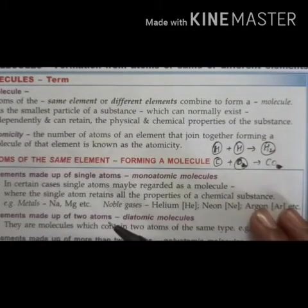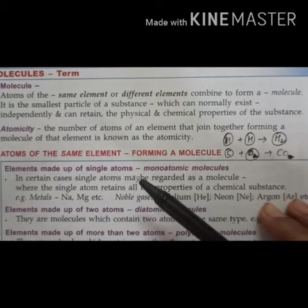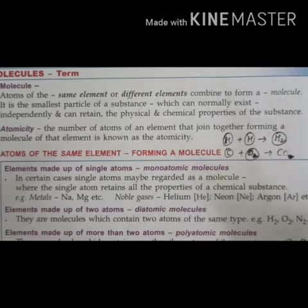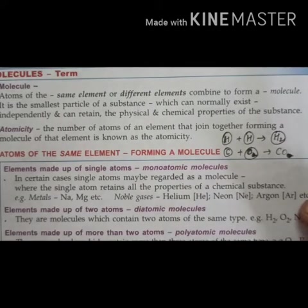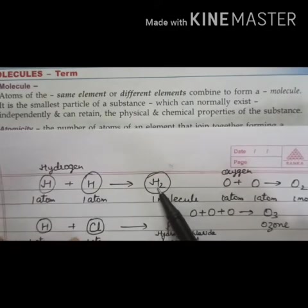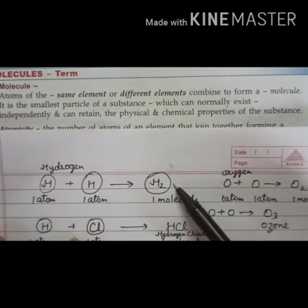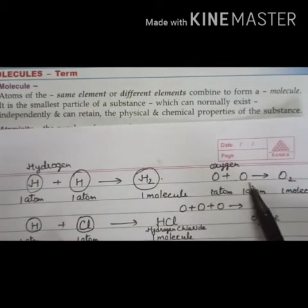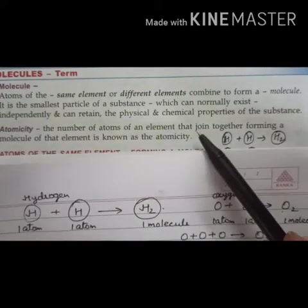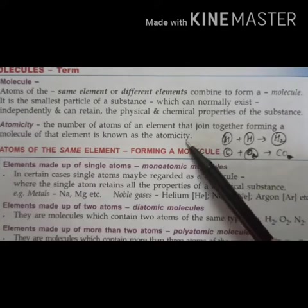Next is atomicity. What is atomicity? It is the number of atoms of an element that join together forming a molecule of that element. For example, the atomicity of hydrogen is two, because two atoms of hydrogen combine to form one molecule of hydrogen. Similarly, the atomicity of oxygen is two, because two atoms of oxygen combine to form one molecule of oxygen.